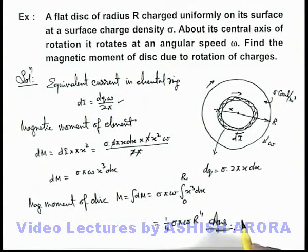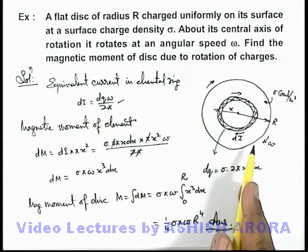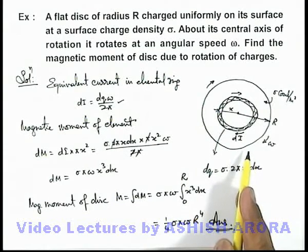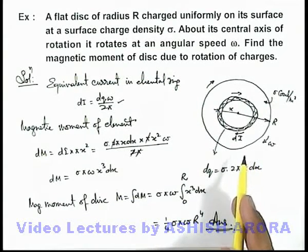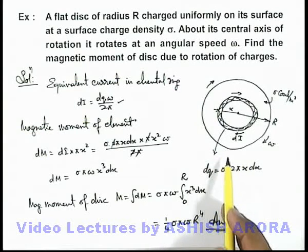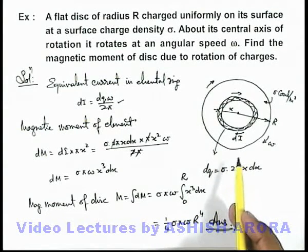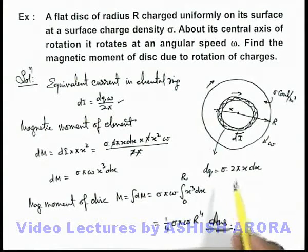We also know that in case of a uniformly charged and uniformly dense rotating body, symmetric rotating body, the ratio of angular momentum to magnetic moment is always a constant. So let's use this logic to calculate it by using an alternative method which will continue on the next sheet.